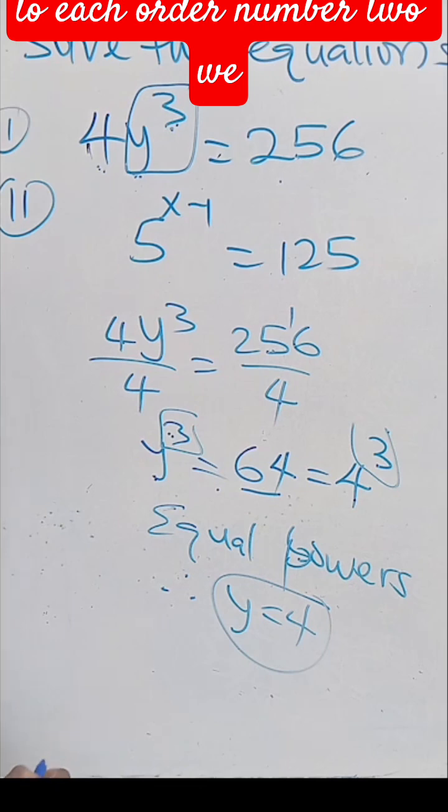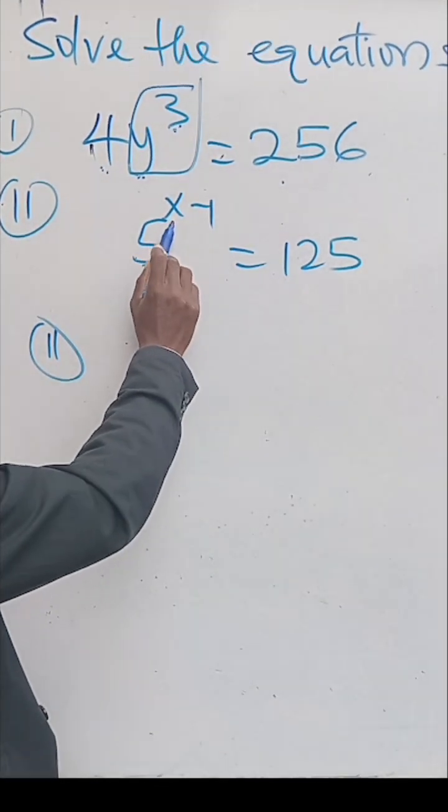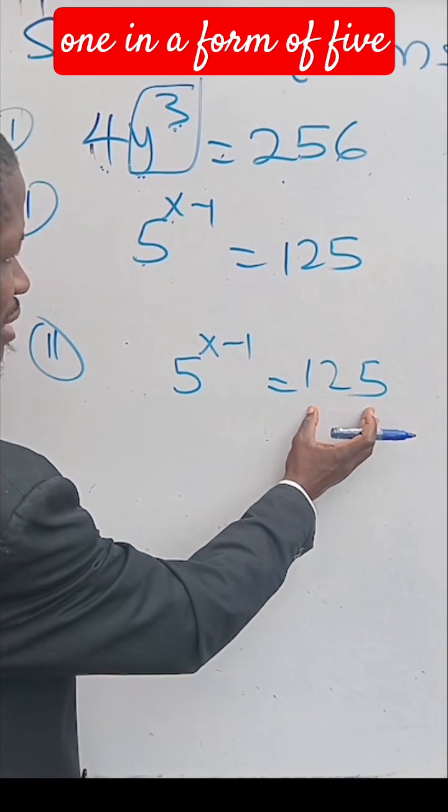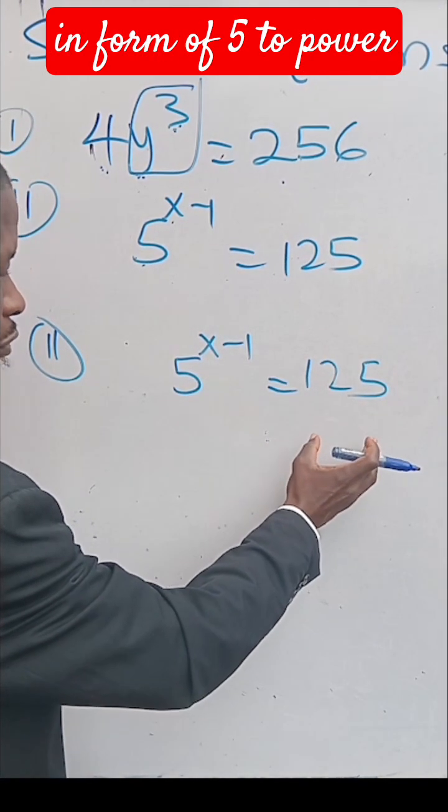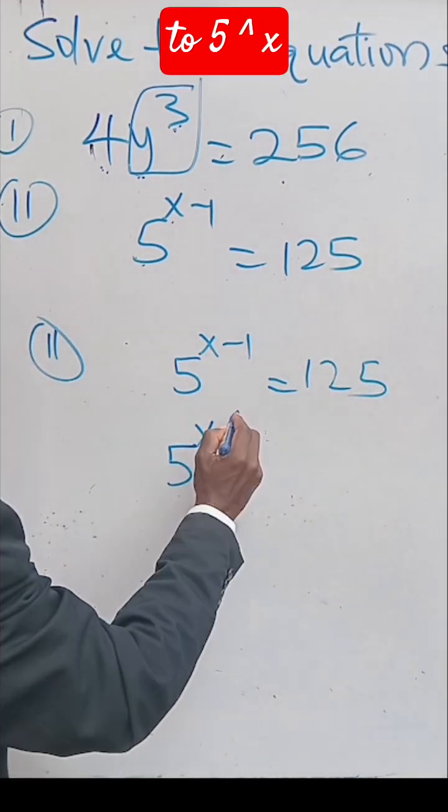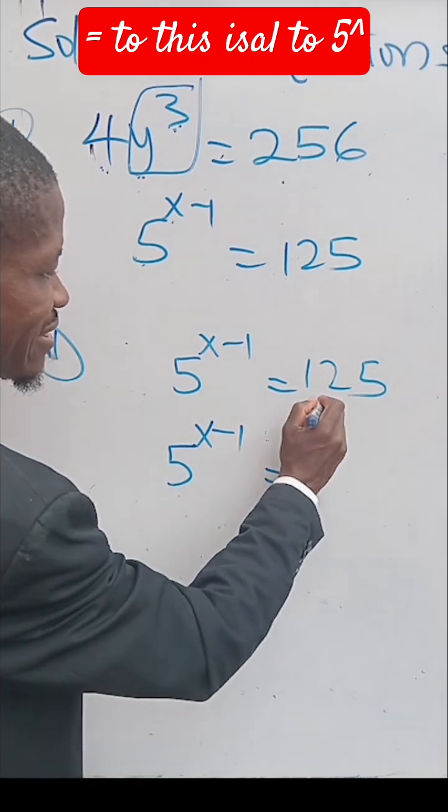Number two: we have 5^(x-1) = 125. What we are going to do is express this one in the form of 5 to power something. So 5^(x-1) equals...